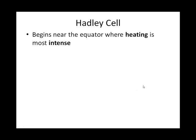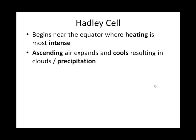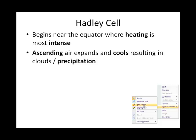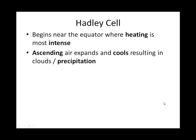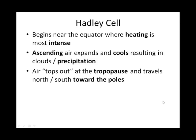Let's look in more detail at the three cells in each hemisphere created by our three-cell model, beginning with the Hadley cell. Both the single-cell and the three-cell model have this in common: intense heating at the Earth's equator causes air to ascend or rise. It goes as far as the tropopause, which acts like a lid. Then the air travels north in the northern hemisphere and south in the southern hemisphere, basically towards the poles.